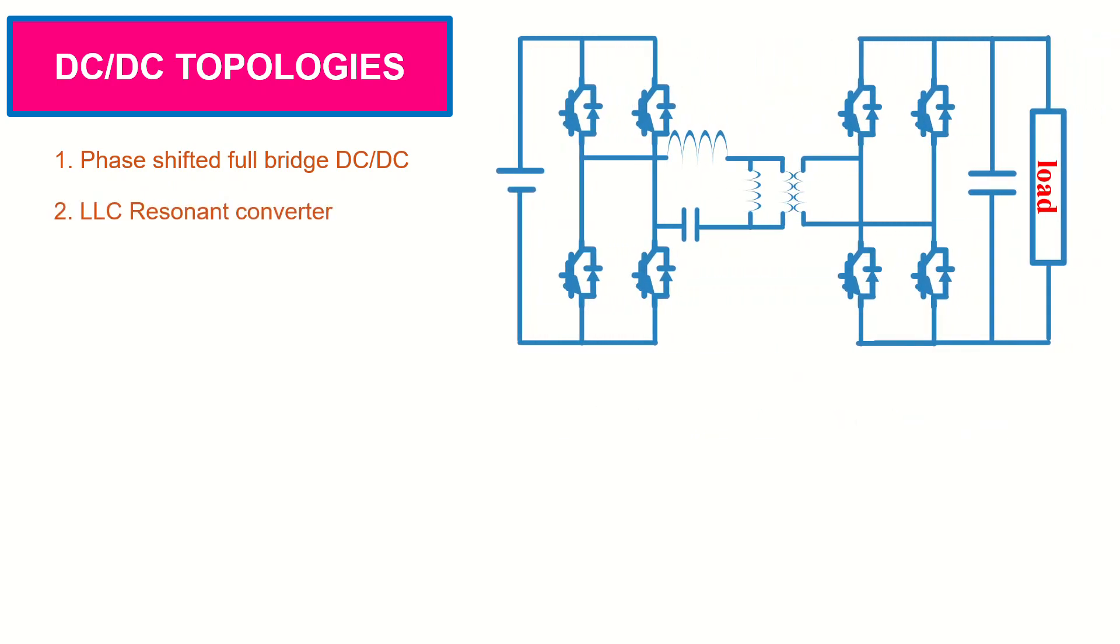Another topology used in the DC-DC stage is the LLC resonant converter. The circuit is operating with variable switching frequency, and output voltage is decided by the value of tank circuit and transformer turn ratio. When the circuit is operated near to the resonant frequency, ZVS during turn-on and ZCS during turn-off can be achieved. And hence it has higher efficiency compared to the phase-shifted full-bridge converter. Drawback of the circuit is that it doesn't have bi-directional capability.